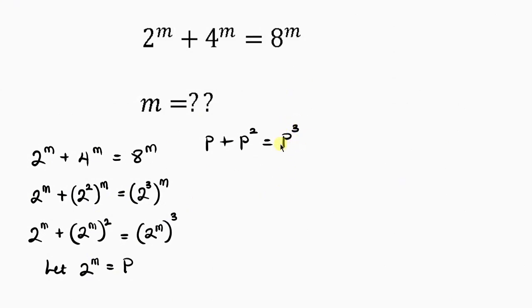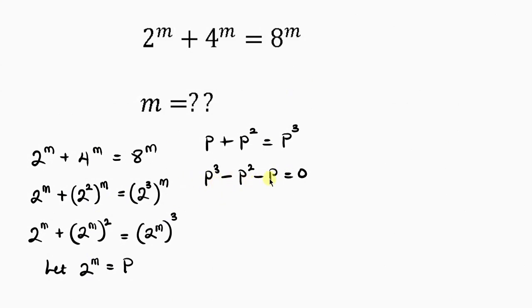Since p cubed is the highest power, I'll move the other terms to the right side. So we have p cubed minus p squared minus p equals 0. Notice that p is common, so let's factorize p out. That gives p times the quantity p squared minus p minus 1, equal to 0.